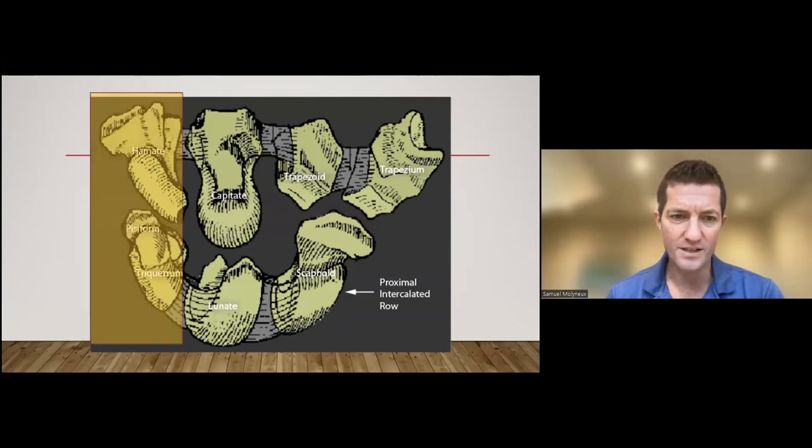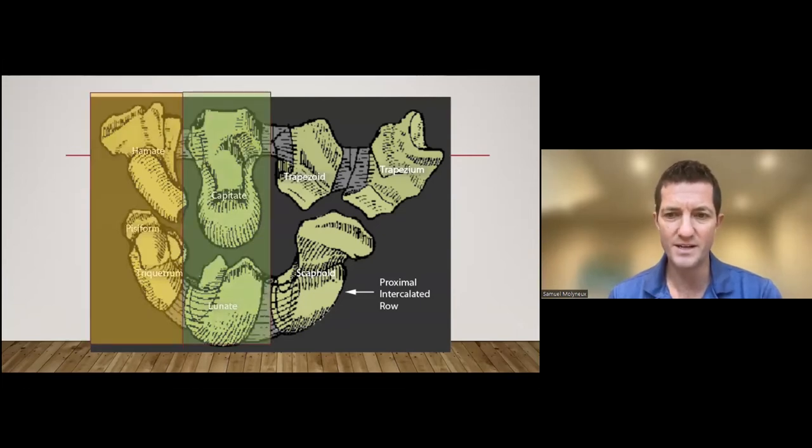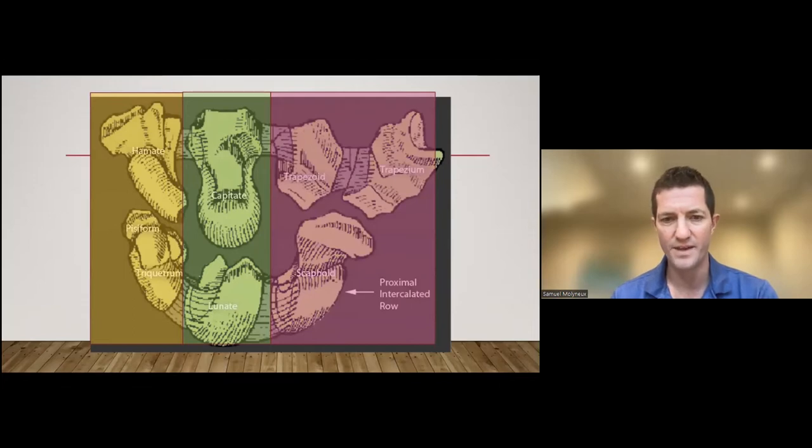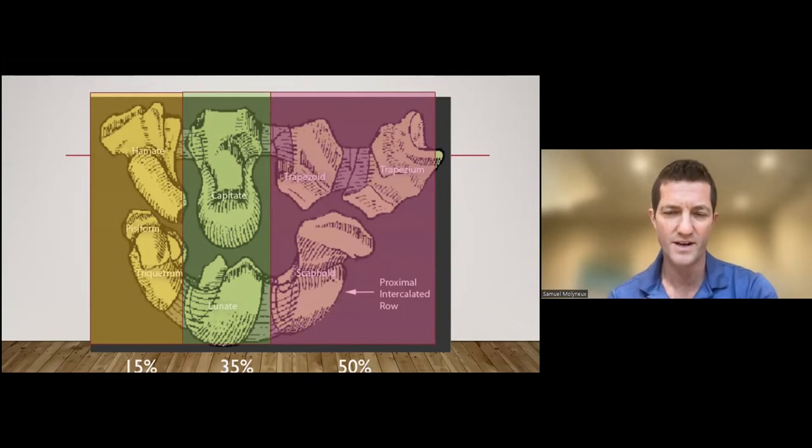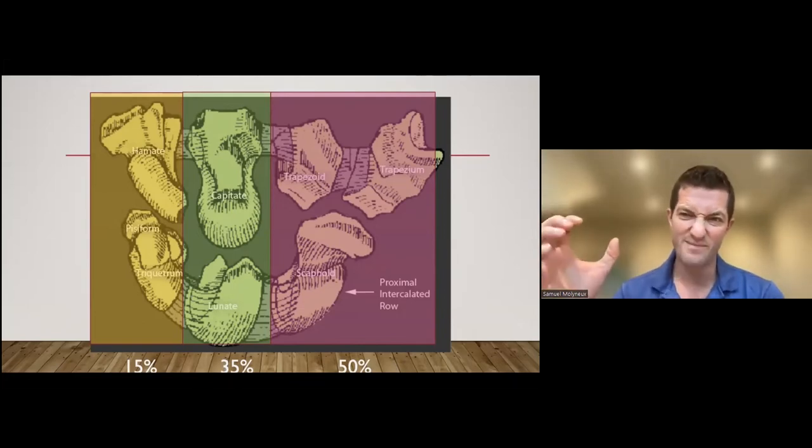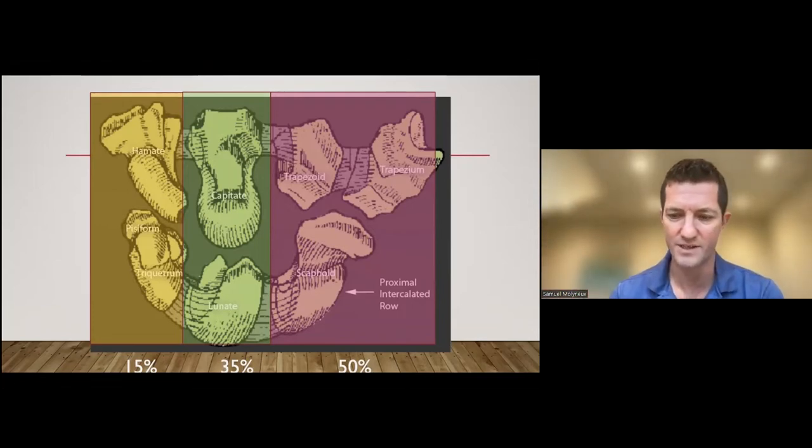The other way to look is ulnar column, medial and radial column, and the force that goes through each of those columns during maximal grip strength. The ulnar side only takes 15% of the force, middle column takes about 35% and the radial side is the one that takes the major part of the force going through the wrist. That makes sense if you think about when you're gripping, a lot of your grip comes through the radial side of your wrist.